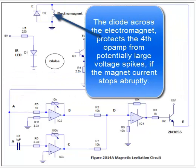The diode across the electromagnet protects the fourth op-amp from potentially large voltage spikes if the magnet current stops abruptly.